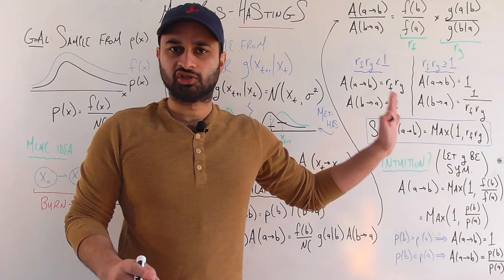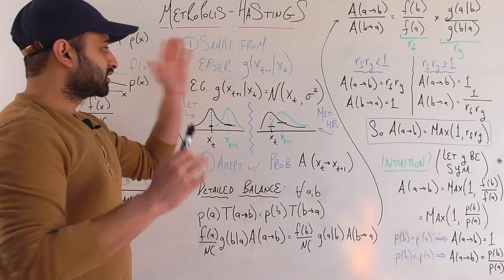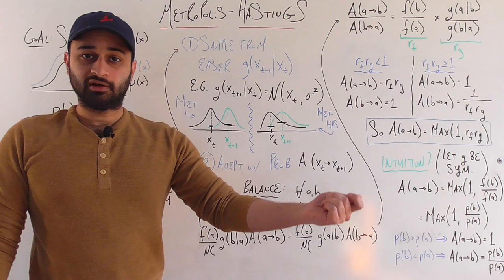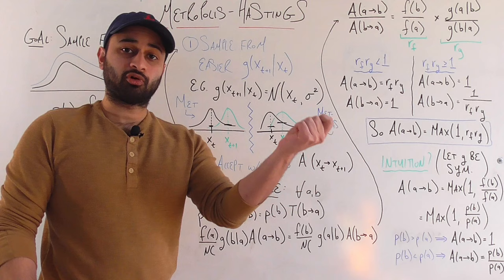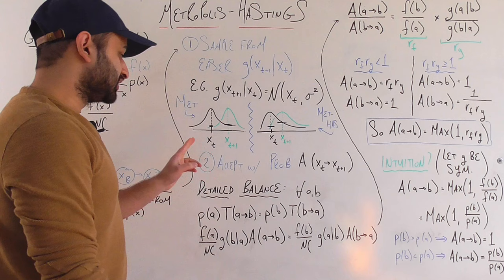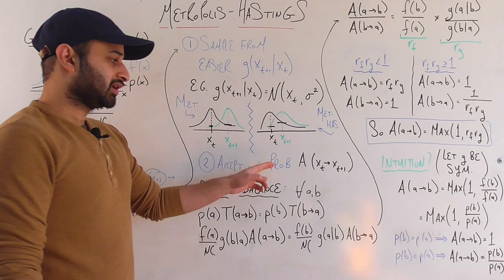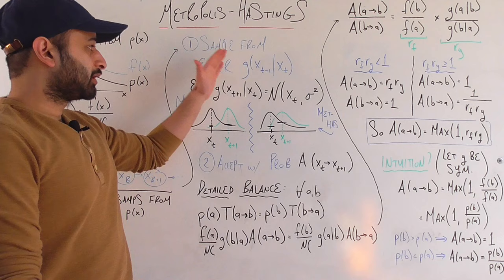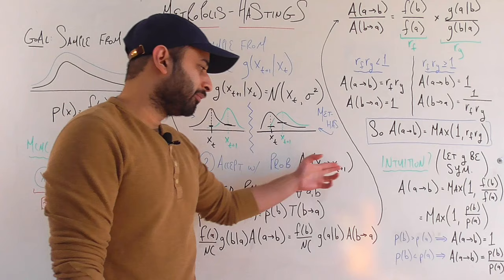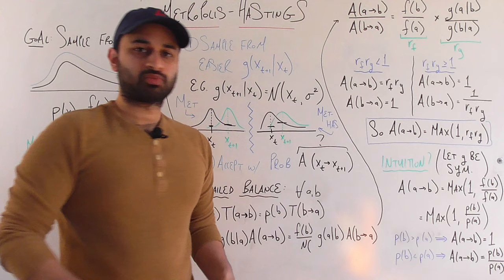The Metropolis case simplifies our math a bit, as we'll see. Either way, step one is to take the easier proposal distribution g — for example the normal — and propose a candidate for the next state of the Markov chain. That candidate is not the definitive next sample; we then ask whether to accept or reject it. Step two: we accept the candidate x_{t+1} with some probability a(x_t → x_{t+1}). The lingering question is how to define this acceptance probability a.